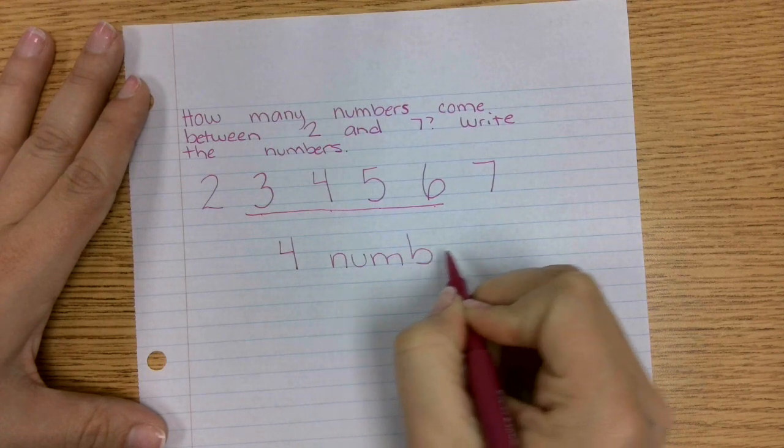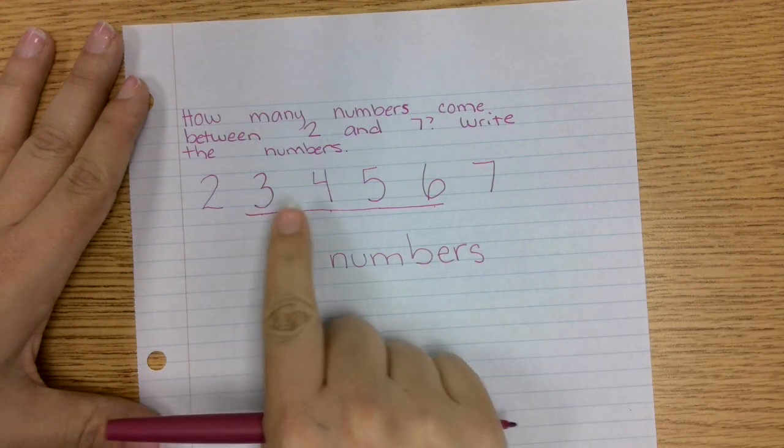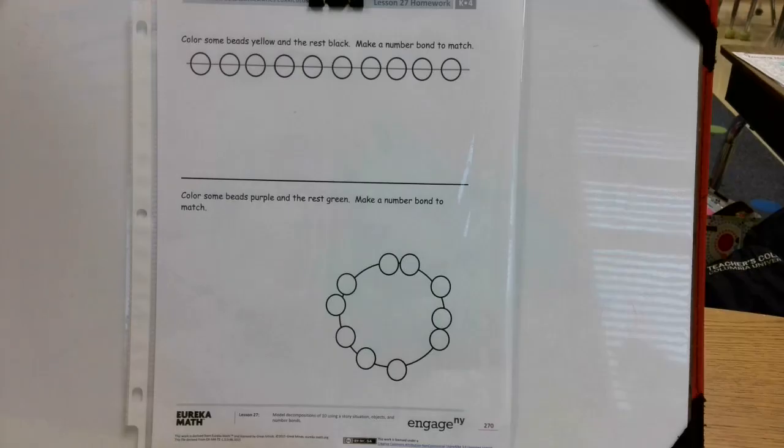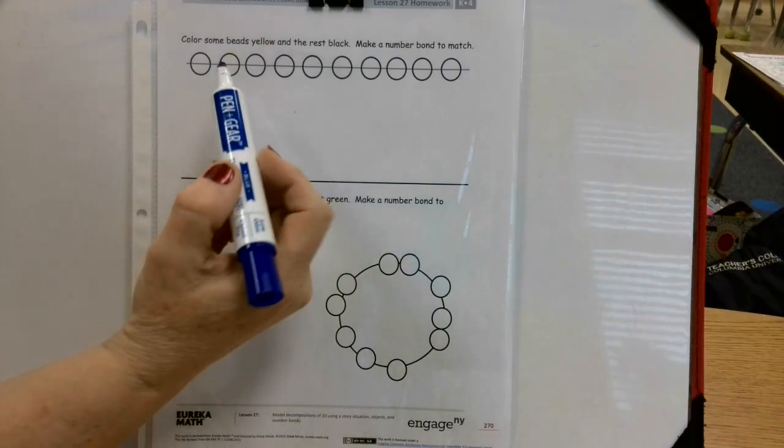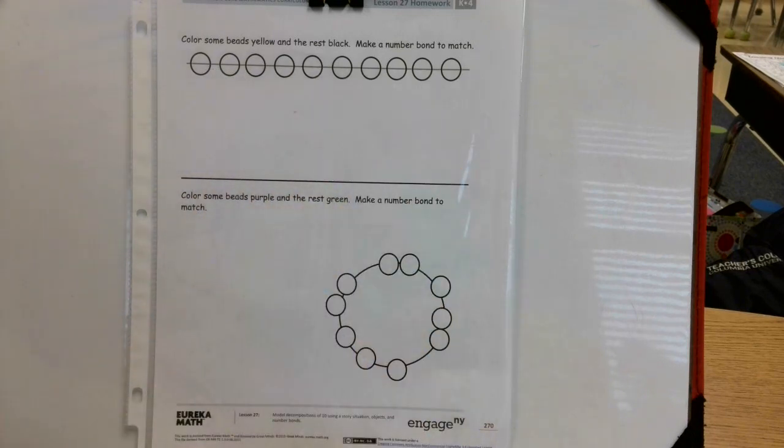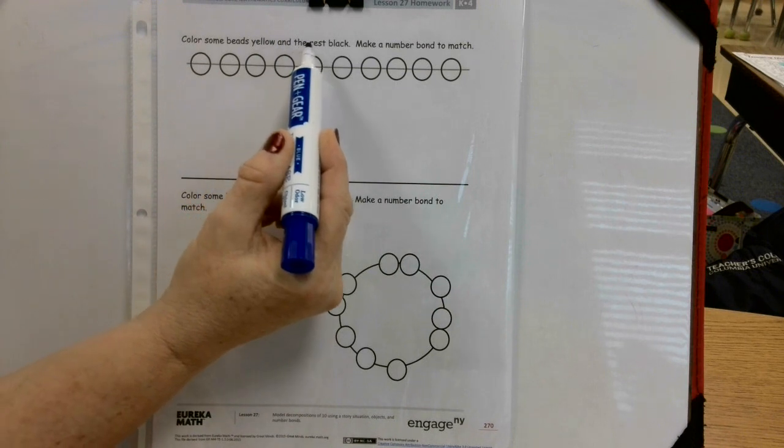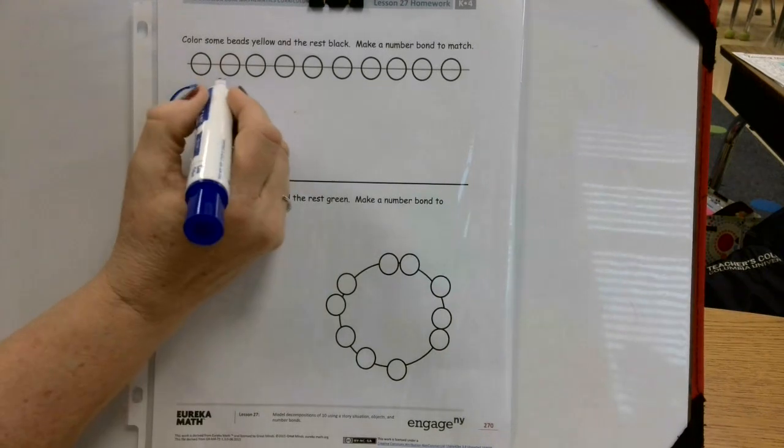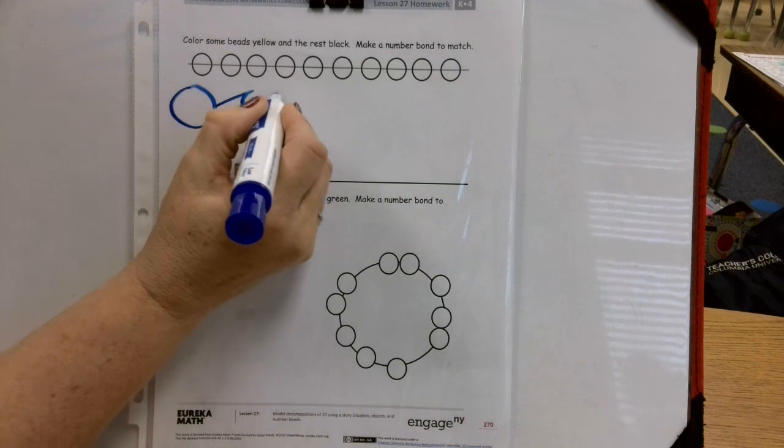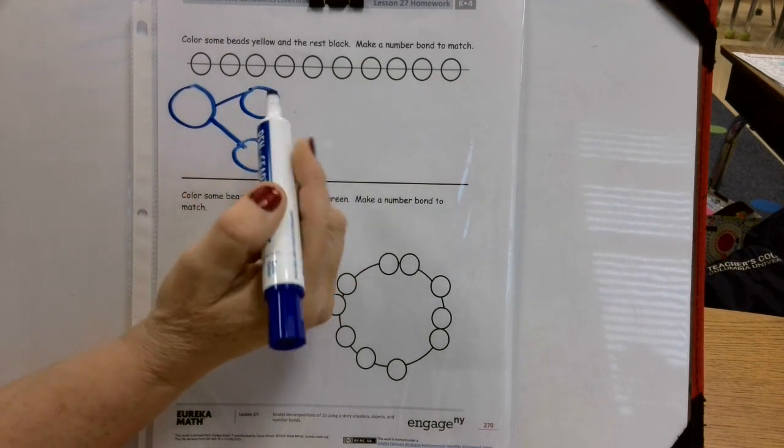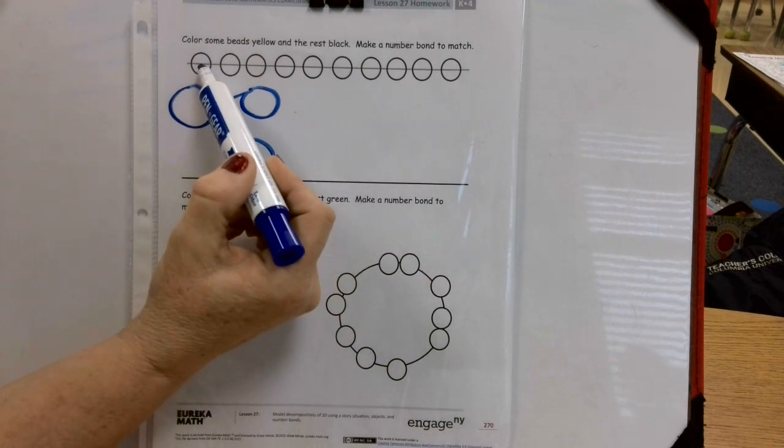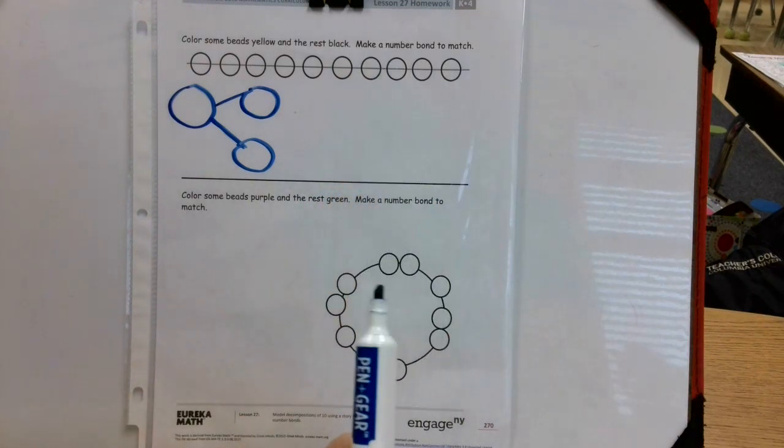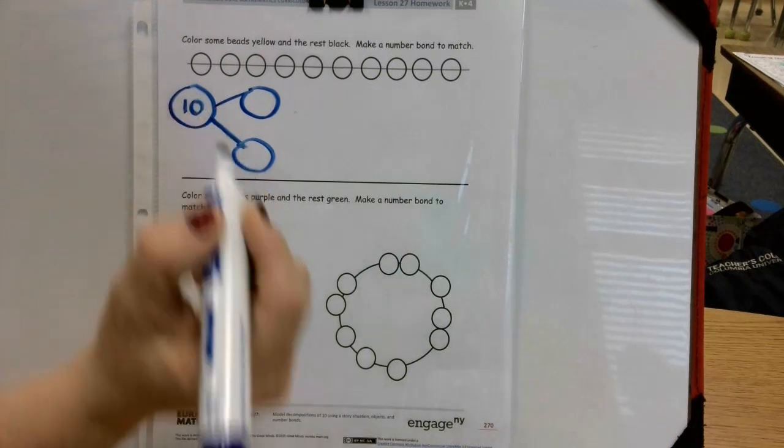Today we're going to work on a number bond, but first of all we need to count how many beads we have to make our number bond. Let's read the sentence to begin with: color some beads yellow and the rest black, make a number bond to match. So if we're going to make a number bond, we're going to put our whole here, and then we're going to have a part and a part. So let's count how many beads we have: one, two, three, four, five, six, seven, eight, nine, ten. How many beads are there? There are ten. So we need to figure out two numbers that we can add together to make the number ten.